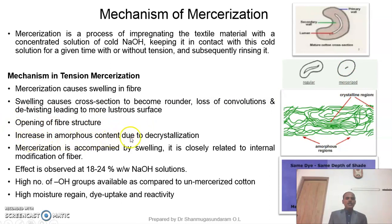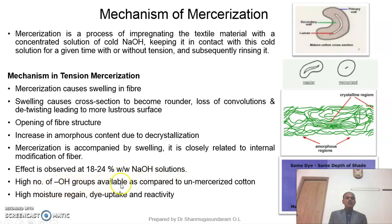There is an increase in amorphous content due to decrystallization. Please look at the figure — the amorphous content has increased after the mercerization process. Mercerization is accompanied by swelling, closely related to internal modification of the fiber. The effect is observed at 18 to 24 percent caustic soda solution. A high number of hydroxyl groups is available compared to unmercerized cotton. High moisture content and dyeability and reactivity are also observed in mercerized cotton fabric.